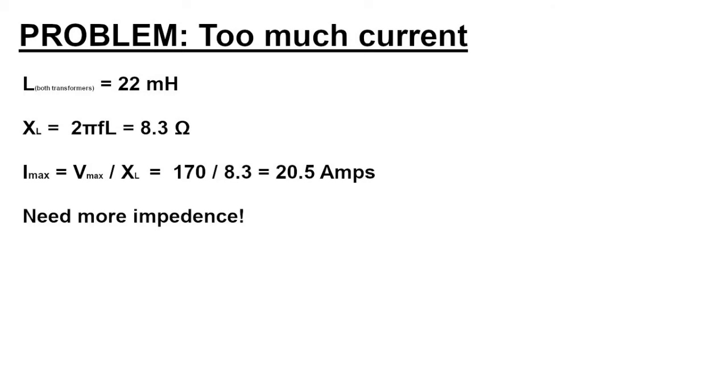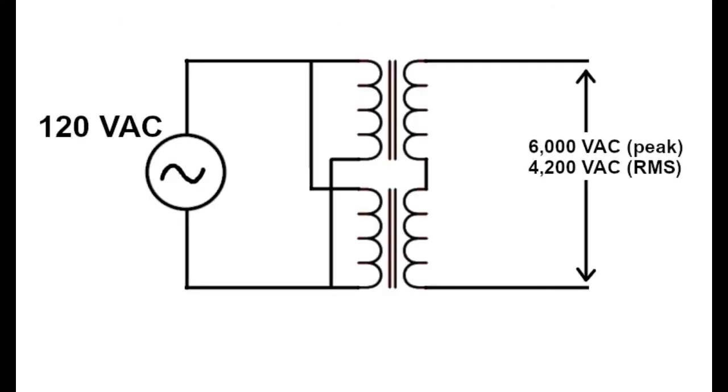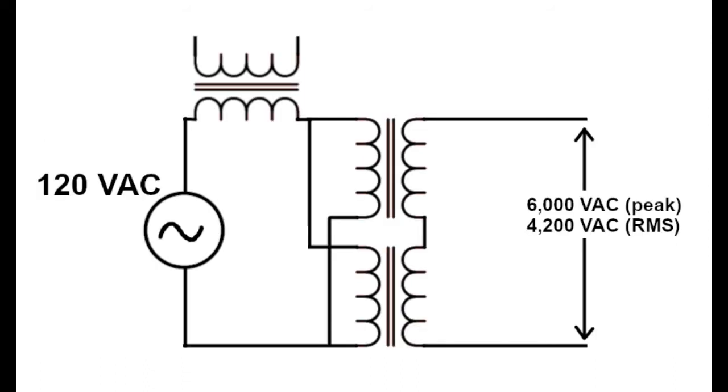So we need a bigger source of impedance. Going back to the original schematic, what I'm going to do is add a third transformer in series with the circuit, but I'm not going to connect the other side to anything. What the third transformer does is it adds inductance in series with the whole circuit to increase the impedance and reduce the current.